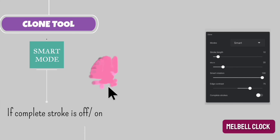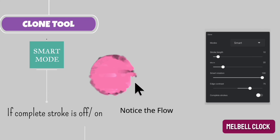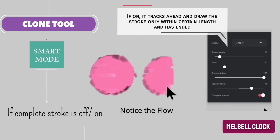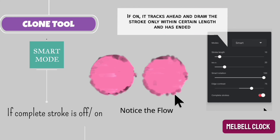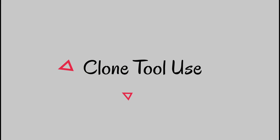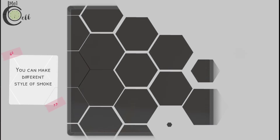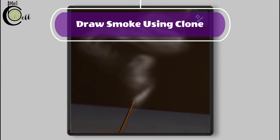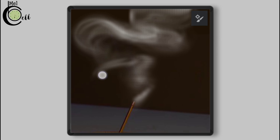If the complete stroke is off, the flow of the stroke would be watery. But if the complete stroke is on, it tracks ahead and draws the stroke only within a certain length. One use of the clone tool is to draw smoke, and this is the easiest method to draw smoke using artistic mode.